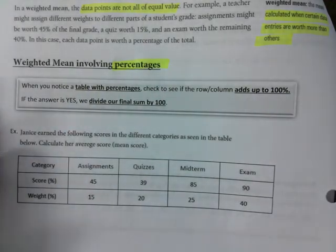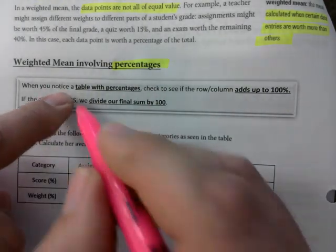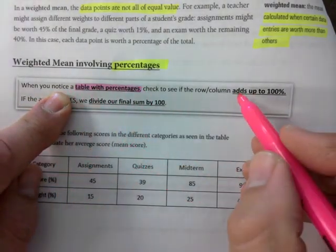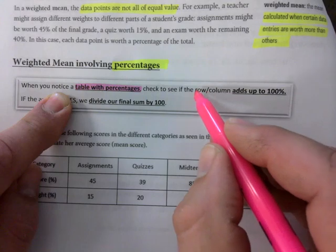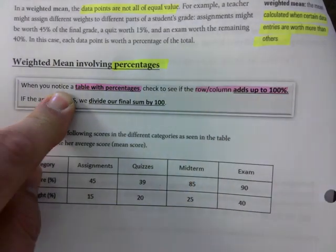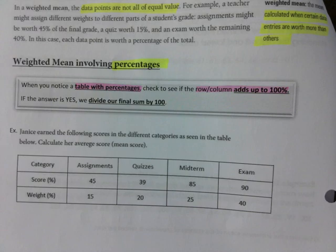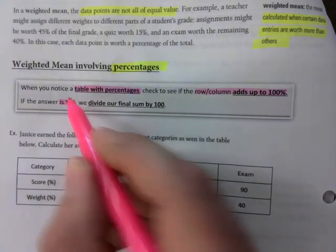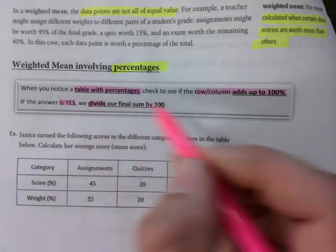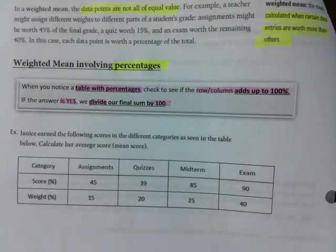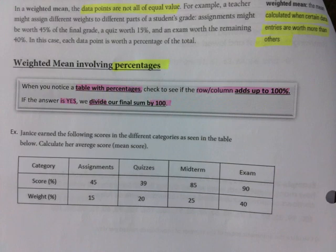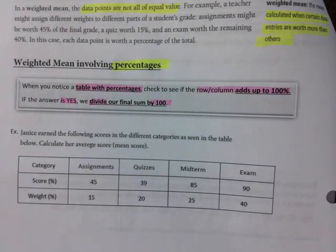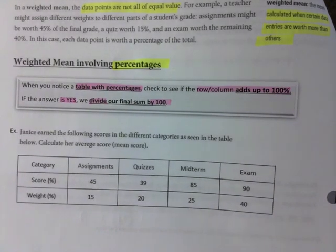Weighted mean where you have percentages - we're going to deal just with that today. And then the other one is weighted mean with repetition when things are repeated. When you notice a table with percentages, you need to check to see if rows add up to 100%. If the answer is yes, we will have to divide by 100. That's what you need to remember. If the answer is yes, you will have to divide by 100.